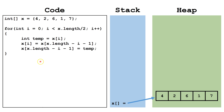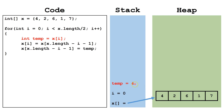Let's trace out this code to see how it works. We start by declaring a variable i and setting it equal to 0. Next, we check: is i, which is 0 right now, less than x.length divided by 2, which is 2? This is true, so we can continue on through the loop. We create a temp variable and copy the value from x[i], which is in this case index 0, into the temp variable.